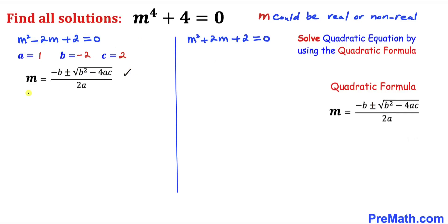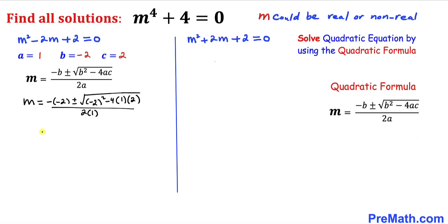Let's fill in the quadratic formula: m = [-(-2) ± √((-2)² - 4·1·2)] / (2·1). Simplifying: negative and negative become positive 2, so m = [2 ± √(4 - 8)] / 2 = [2 ± √(-4)] / 2.